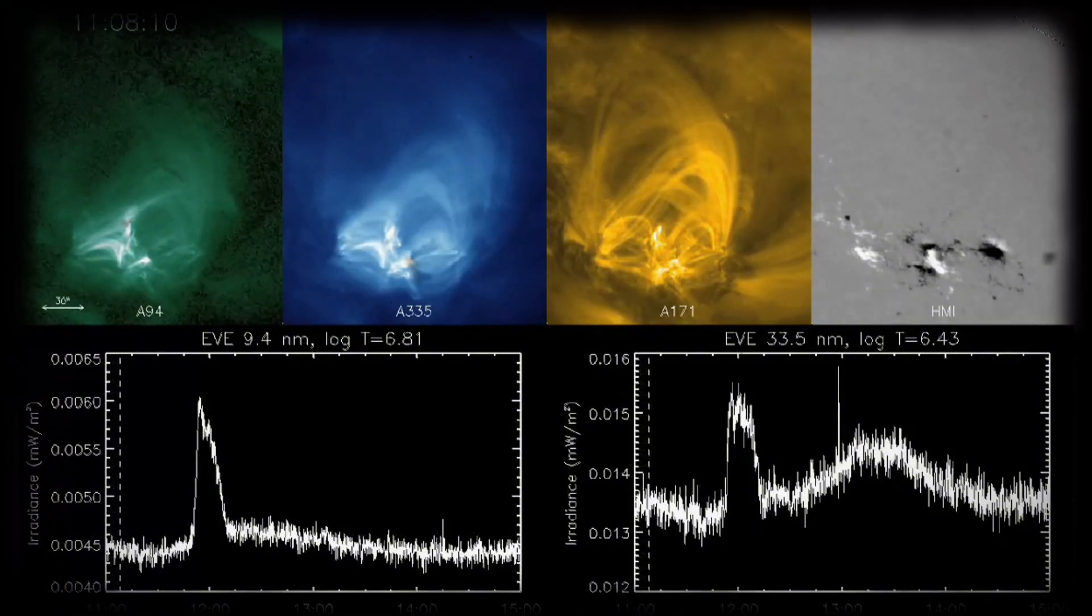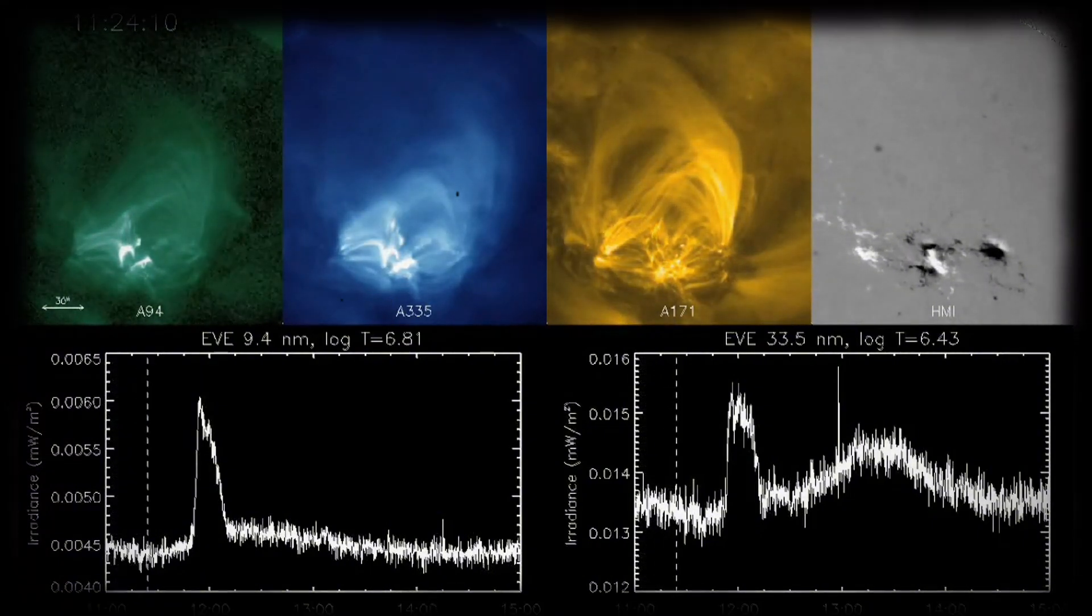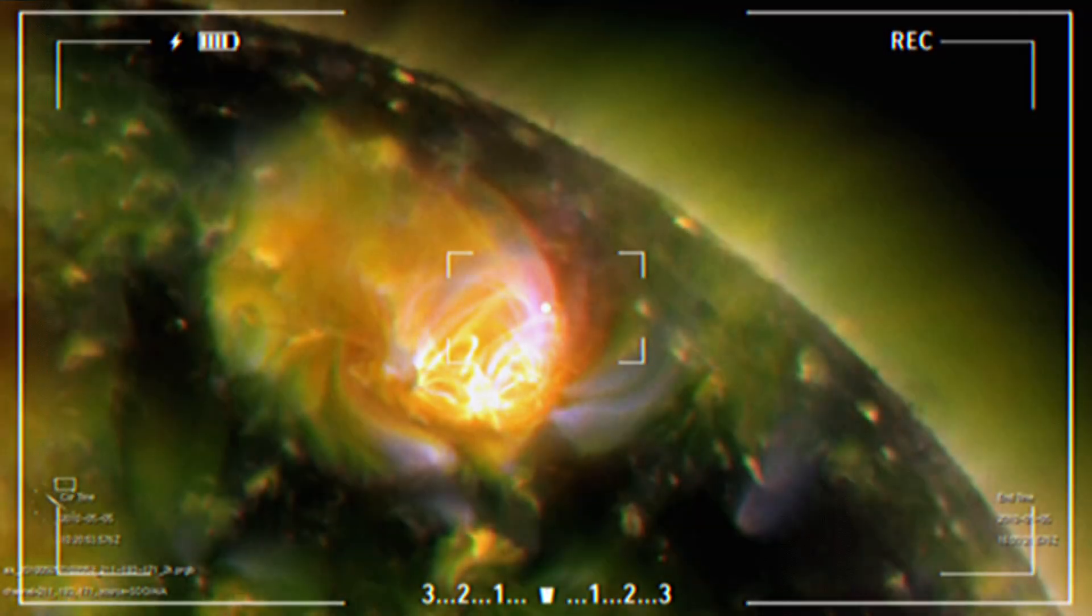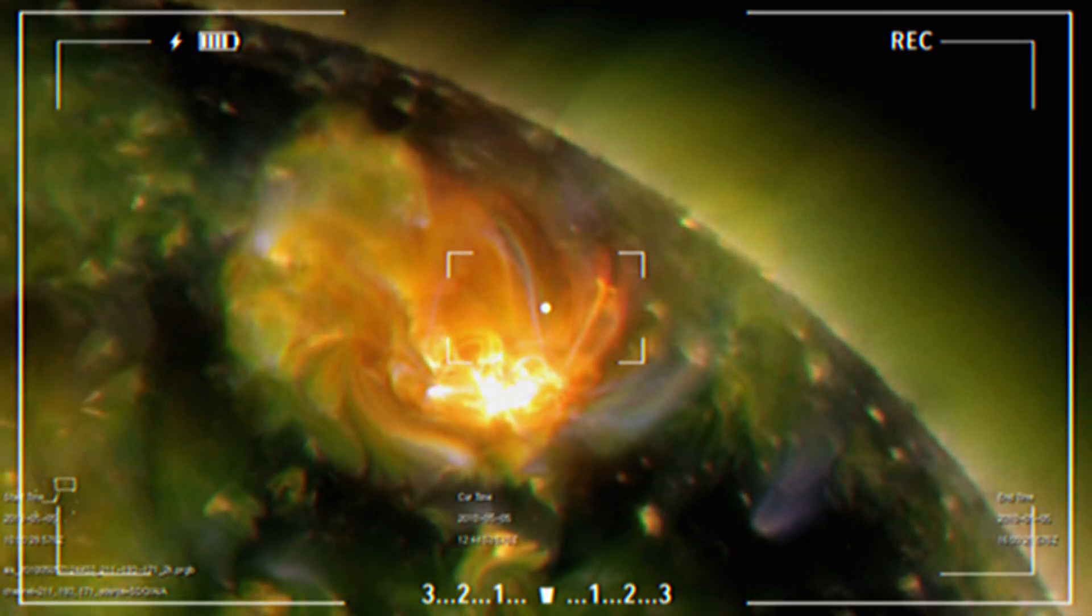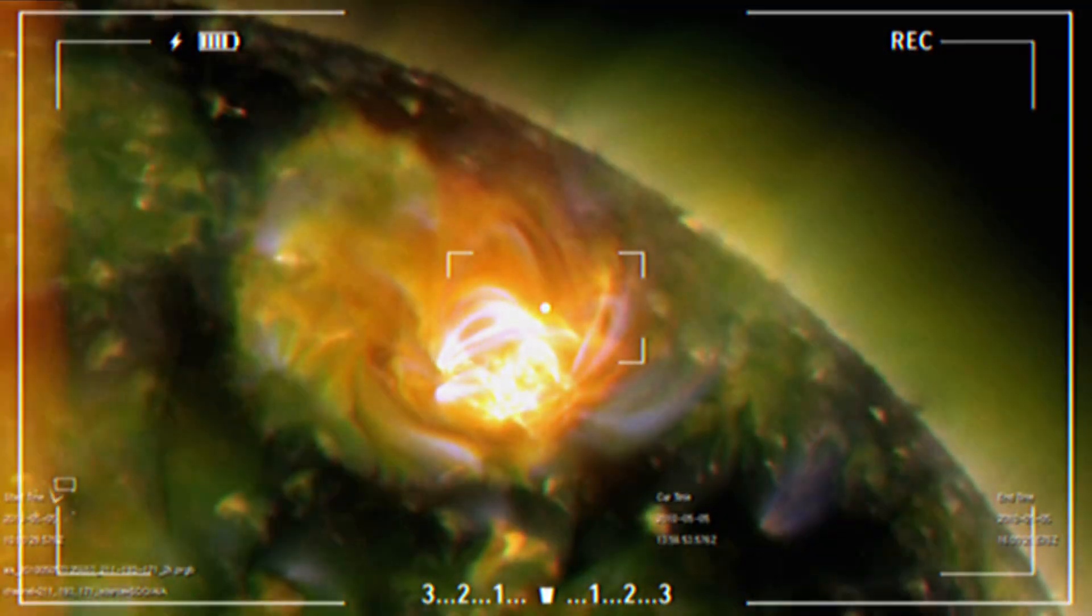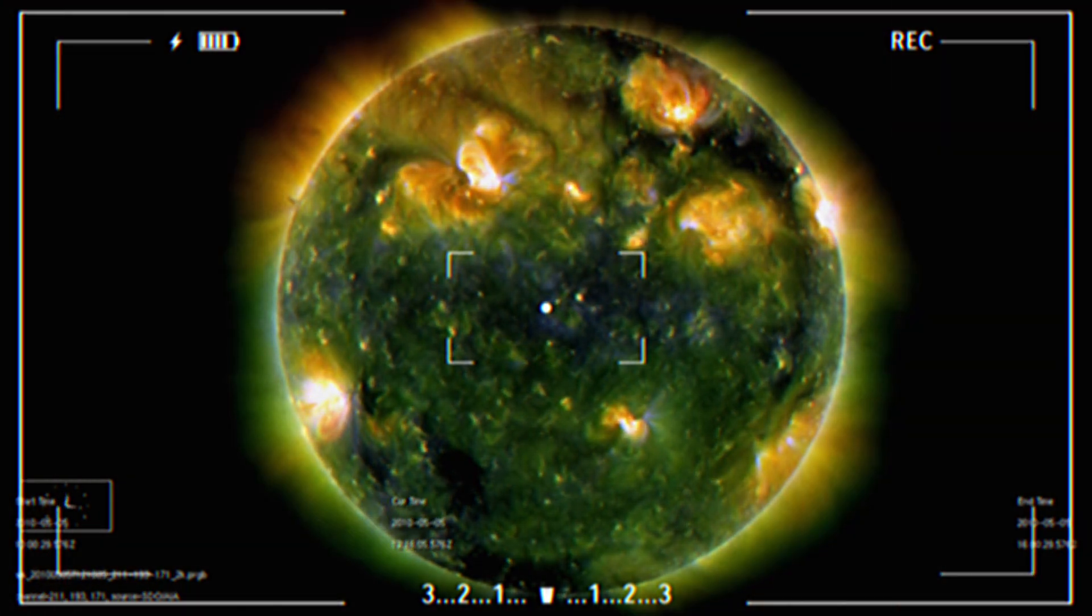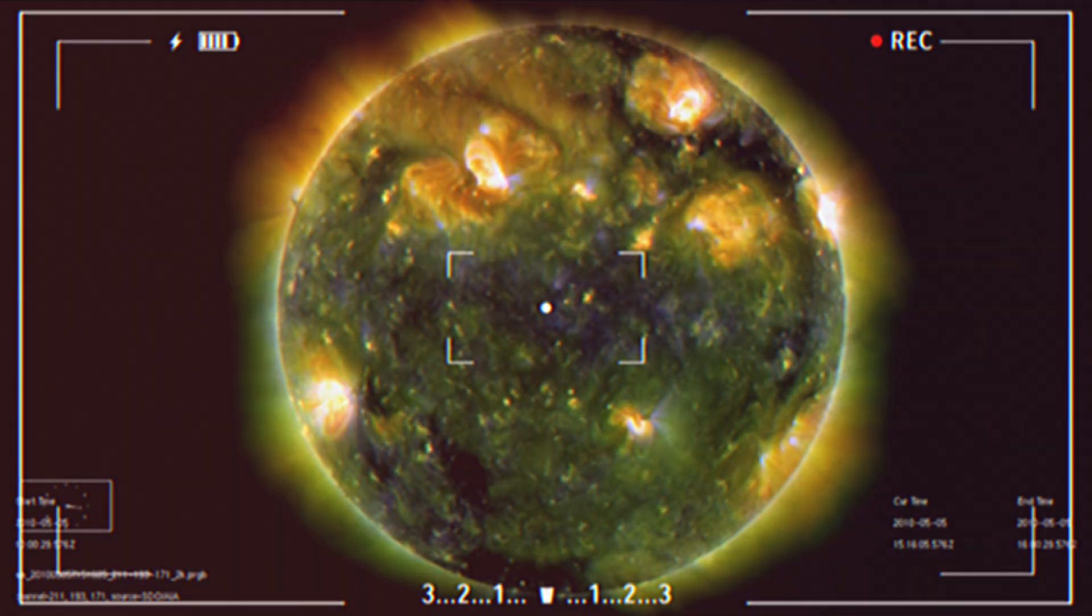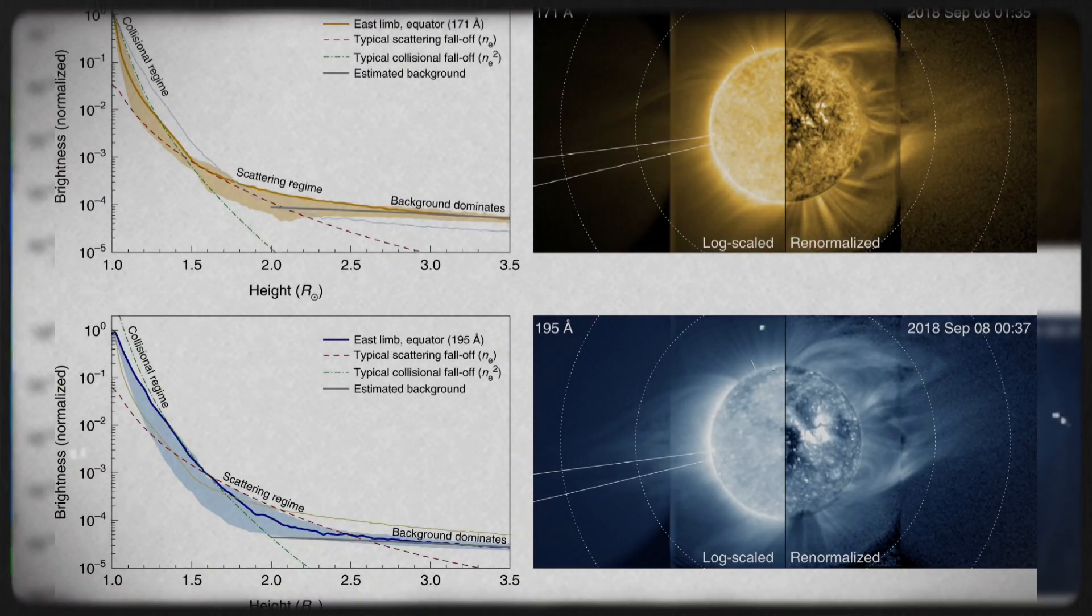Among the array of wavelengths monitored by SDO, one that truly stands out is the extreme ultraviolet wavelength of 17.1 nanometers. This specific wavelength offers us an exclusive glimpse into the solar corona, the outermost layer of its atmosphere. The corona, a hub of intense solar activity with temperatures soaring into the millions of degrees, holds the enigmas of solar phenomena like coronal mass ejections and solar flares.